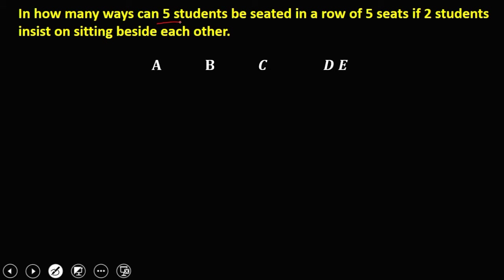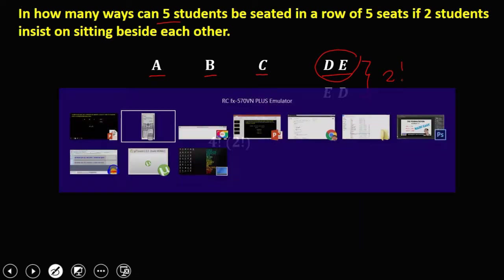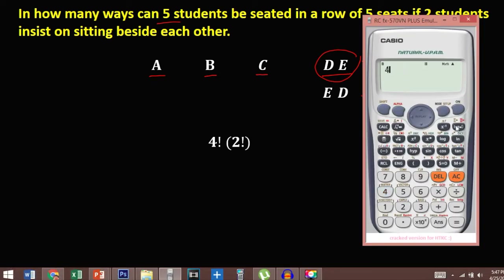Since D and E are treated as one unit, we only have 4 units to arrange, giving us 4 factorial. But since we can rearrange D and E — E first then D — we also have 2 factorial. So the total is 4 factorial times 2 factorial, which gives us 48 ways.